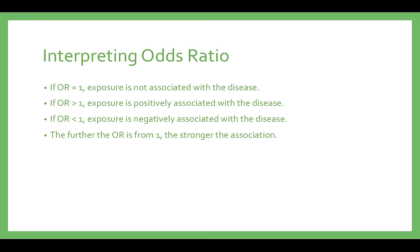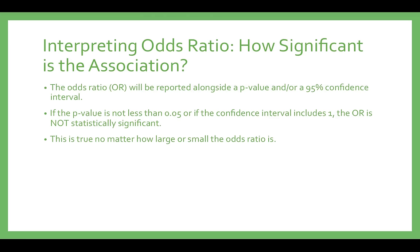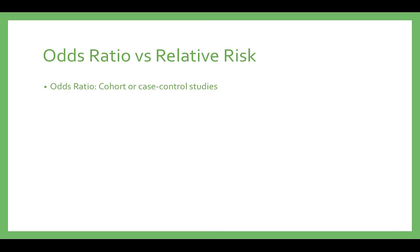Odds ratios can range from zero to infinity. They have three interpretations identical to those presented for relative risk. The rules for determining whether an odds ratio is statistically significant are also the same as with relative risk. Odds ratios can be calculated for both cohort and case-control designs. Odds ratios are used when comparing events to non-events, with their calculation depending on the study design. For example, consider comparing a group of individuals who developed measles to those who did not, and then determining whether they received all the recommended vaccinations.